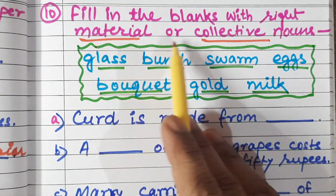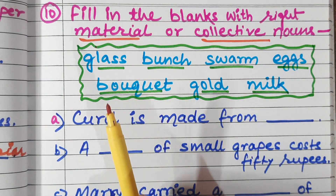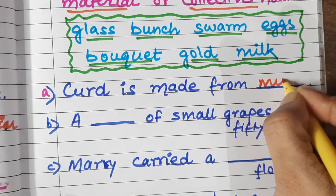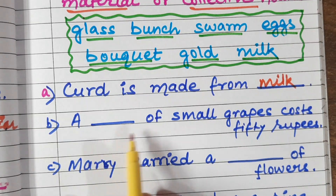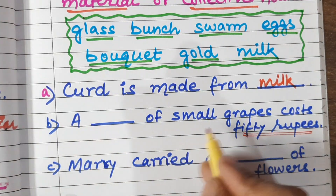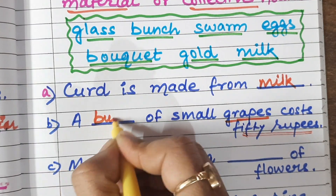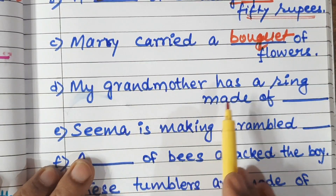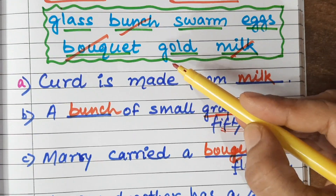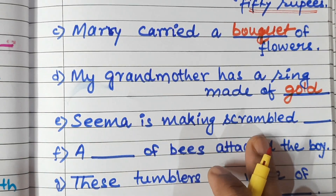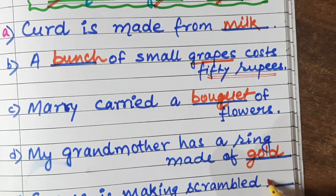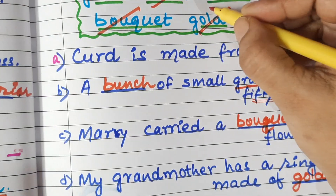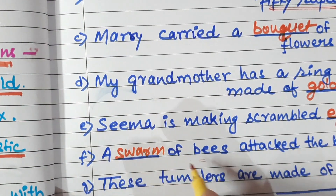Fill in the blanks with the right material or collective nouns from the box. Curd is made from milk. A bunch of small grapes costs 50 rupees. Mary carried a bouquet of flowers. My grandmother has a ring made of gold. Seema is making scrambled eggs. A swarm of bees attacked a boy.